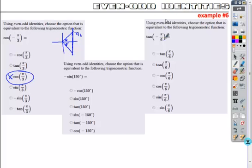So if I had something like this, the tangent of negative pi over 6, if I sketch what I have, minus pi over 6 looks right here.